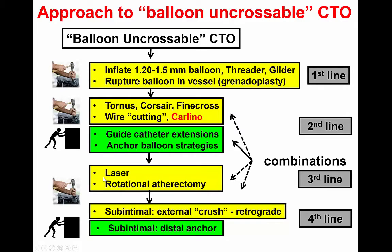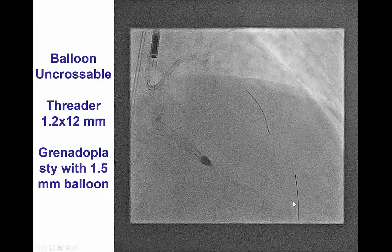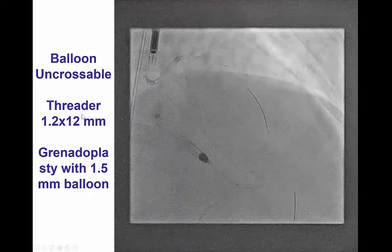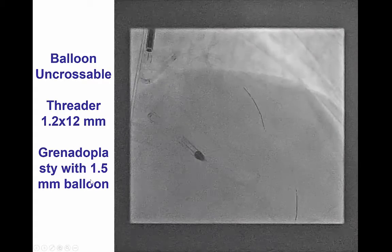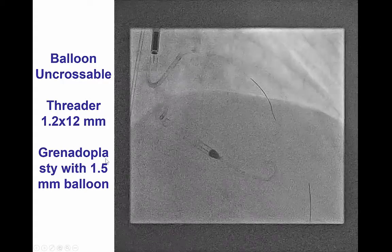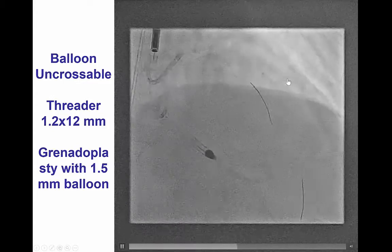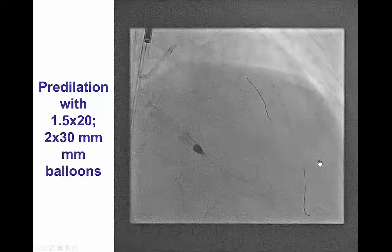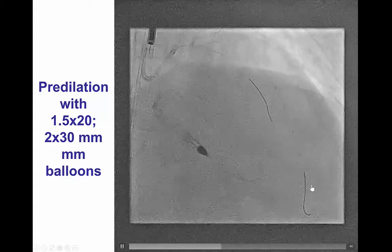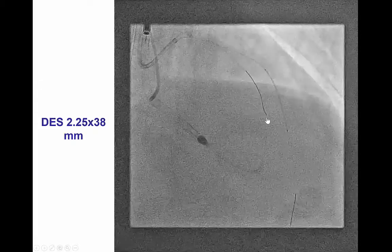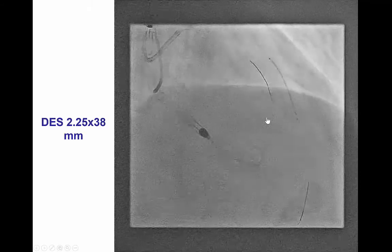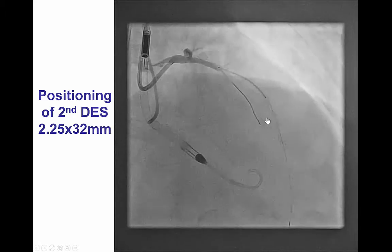The laser is a very helpful adjunct for these cases. If we can exchange the wire for a rotafloppy wire, atherectomy can be useful as well. The fourth and last option is to go subintimally to minimize resistance and re-canalize the lesion. In this case, we tried initially a threader microcatheter that did not cross. We then performed granadoplasty with a 1.5 mm balloon, and after that were able to advance the Finecross microcatheter through the occlusion all the way to the distal vessel. We exchanged the Fielder FC wire for a workhorse wire and performed pre-dilatation with small balloons, followed by stenting with long 38 mm drug-eluting stents and a more proximal drug-eluting stent.